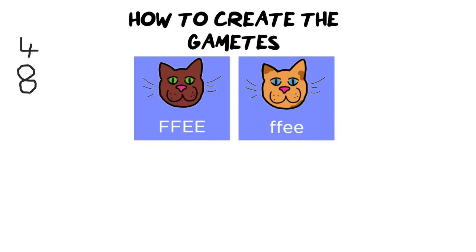In a test or exam, I underline the letters I've already used so I know I haven't used them more than twice — that's the maximum allowed. I underline the capital F and capital E to form my first gamete, with only one F and one E. I then repeat the process: underline the same capital F with another capital E to form the next gamete.